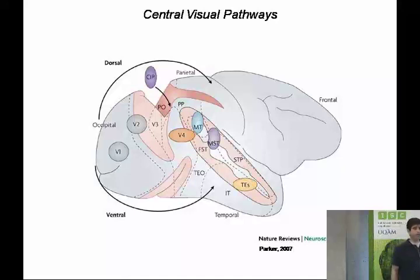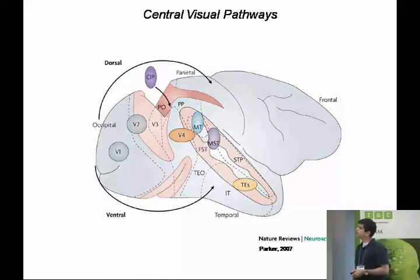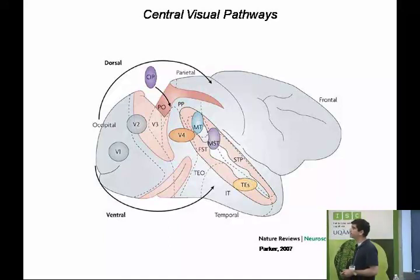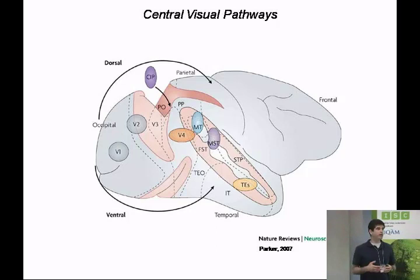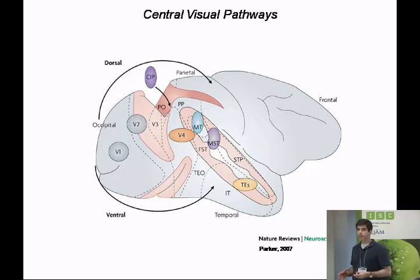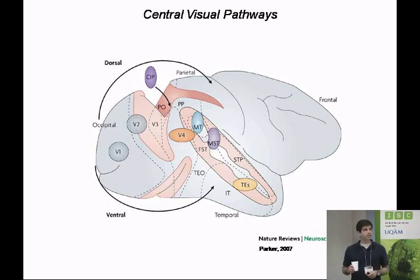I'll dive into a diagram of the monkey visual cortex. There are many, many areas dedicated to vision. The largest and probably most important is the primary visual cortex, V1. From V1 we can trace at least two pathways — a temporal pathway and a parietal pathway — broadly involved in object recognition and motion and spatial orientation, respectively.